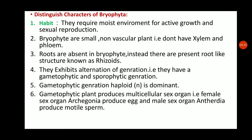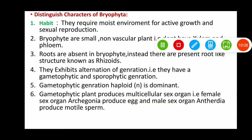The gametophytic plant produces multicellular sex organs. There are two types: male reproductive organs called antheridia, and female reproductive organs called archegonia. The archegonia produce eggs, and the antheridia produce motile gametes called antherozoids. This is an important exam question: the female sex organ of Bryophyta is archegonia.